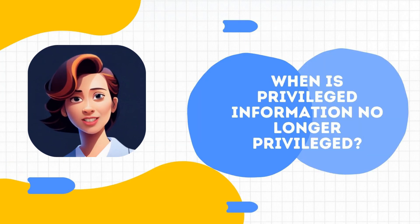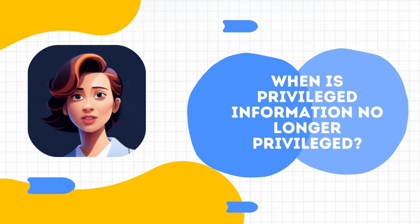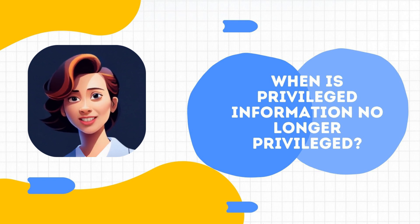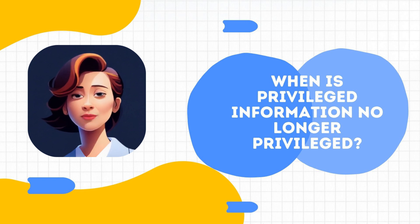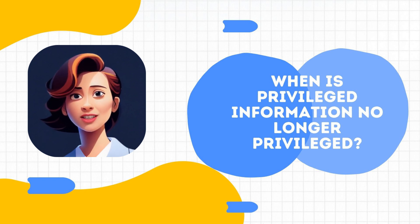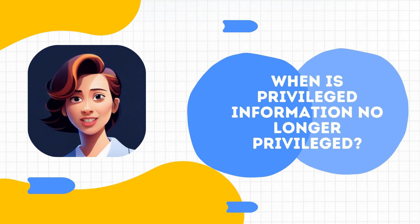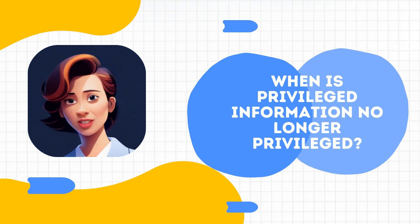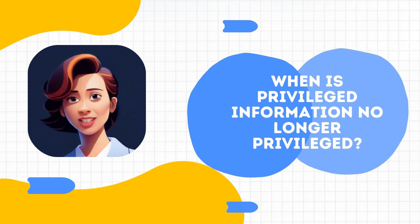When is privileged information no longer privileged? Privileged information can stop being privileged if you voluntarily share your privileged information with someone else, use privileged information to commit a crime or do something illegal, or threaten or try to harm your lawyer or others involved in your case.